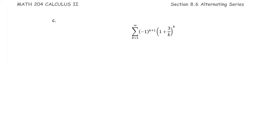In this example, we have the summation of negative 1 to the power k plus 1, multiplied by 1 plus 3 over k, raised to the power k. As a form of the alternating series, the ak is 1 plus 3 over k raised to the power k.